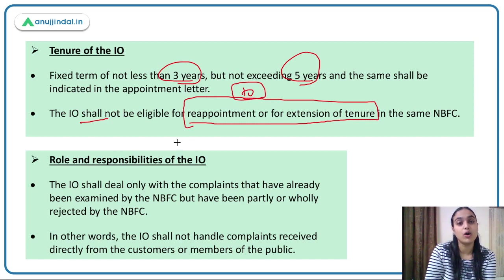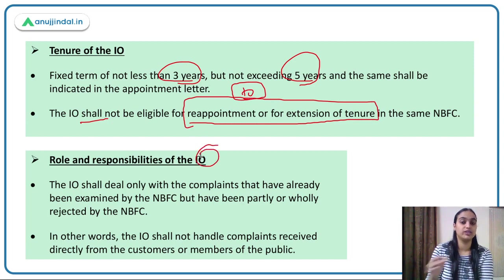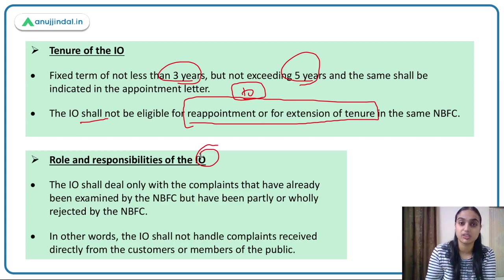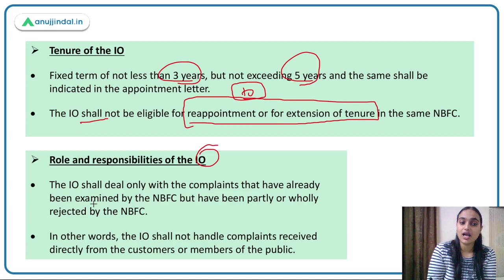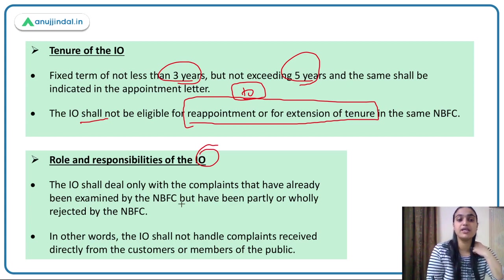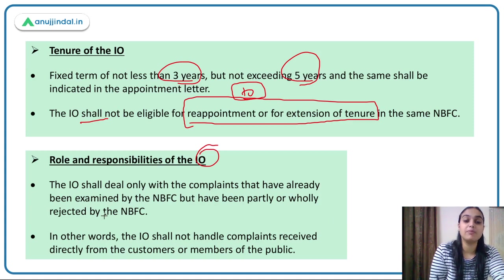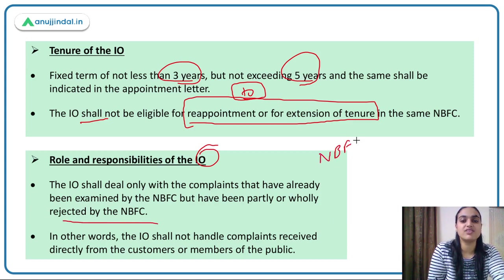The main role of an IEO is to improve the grievance handling mechanism and handle customer complaints. The IEO shall deal only with complaints that have already been examined by the NBFC but have been partly or wholly rejected by the NBFC — meaning the NBFC found no deficiency in their financial services but the customer's grievance remains unresolved.